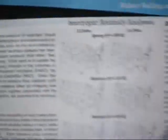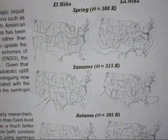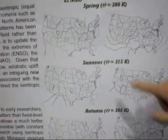In La Niña years, you actually see a stronger isentropic trough in the southern part of the United States, which is indicative of less moisture and less rainfall.